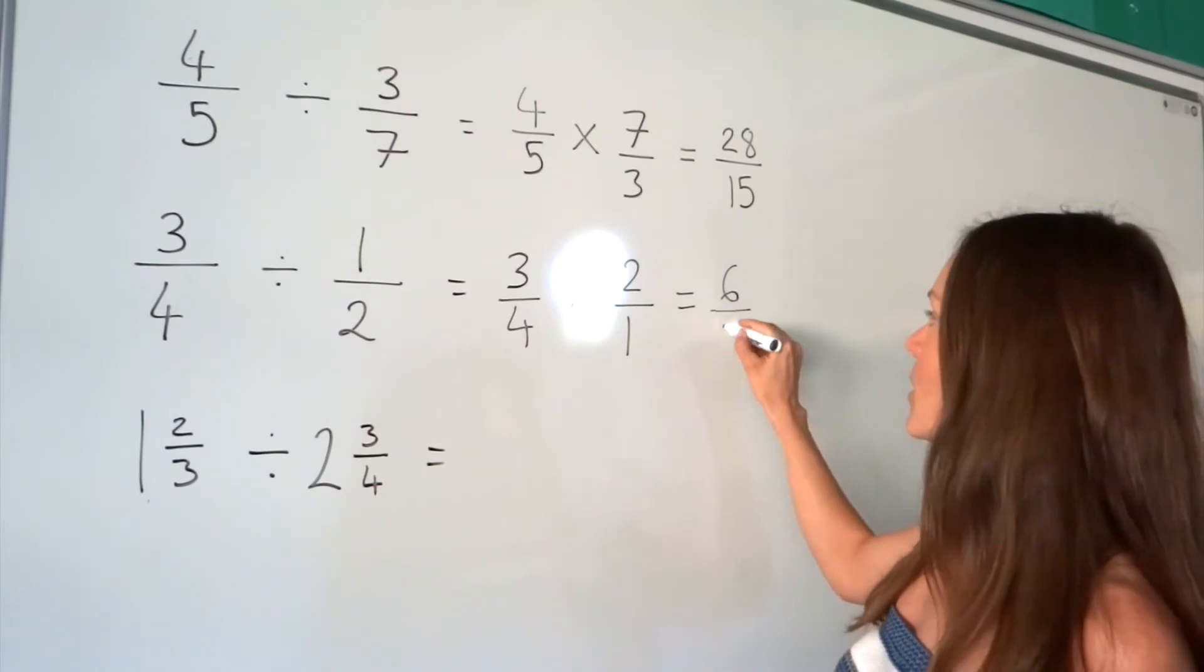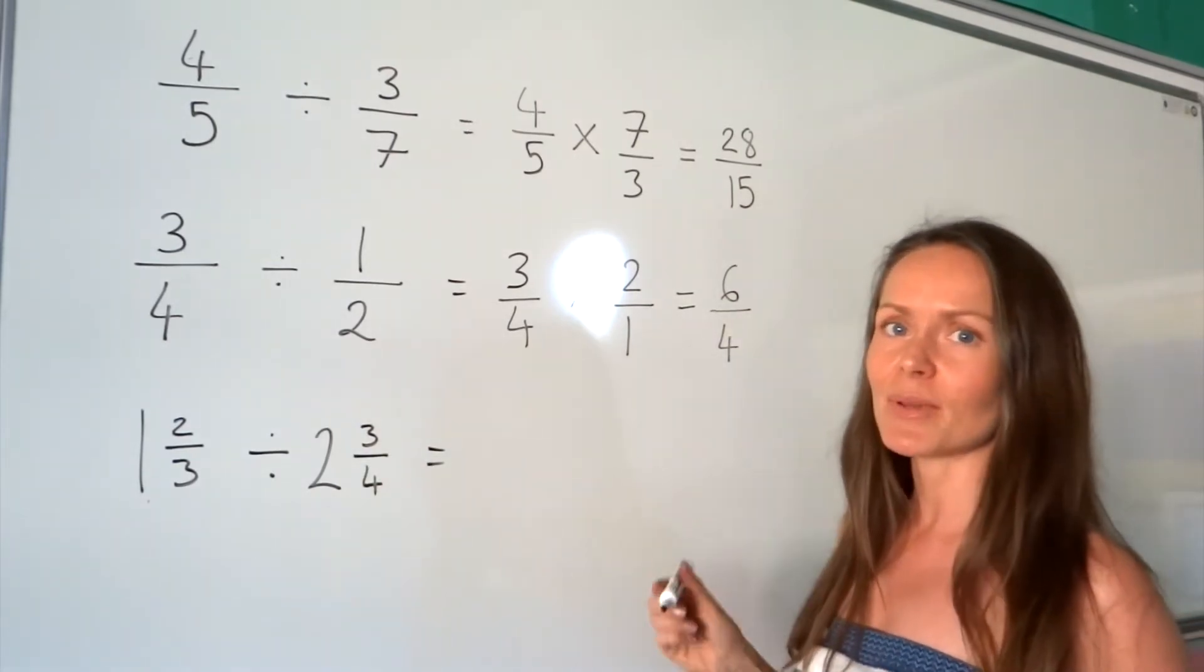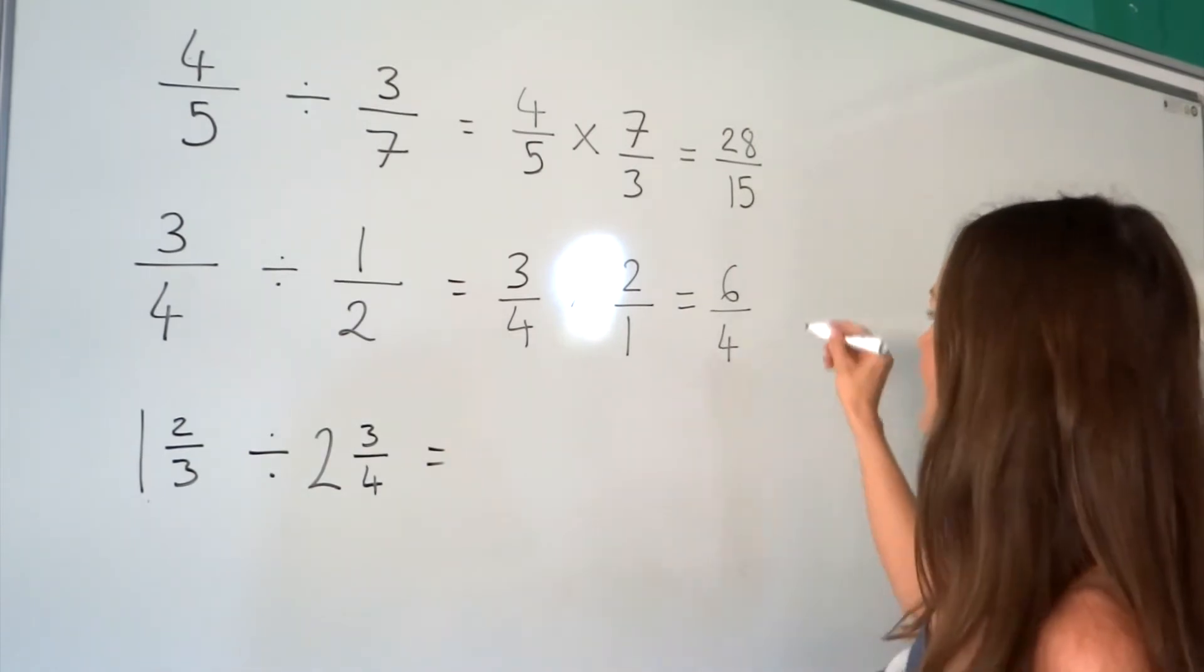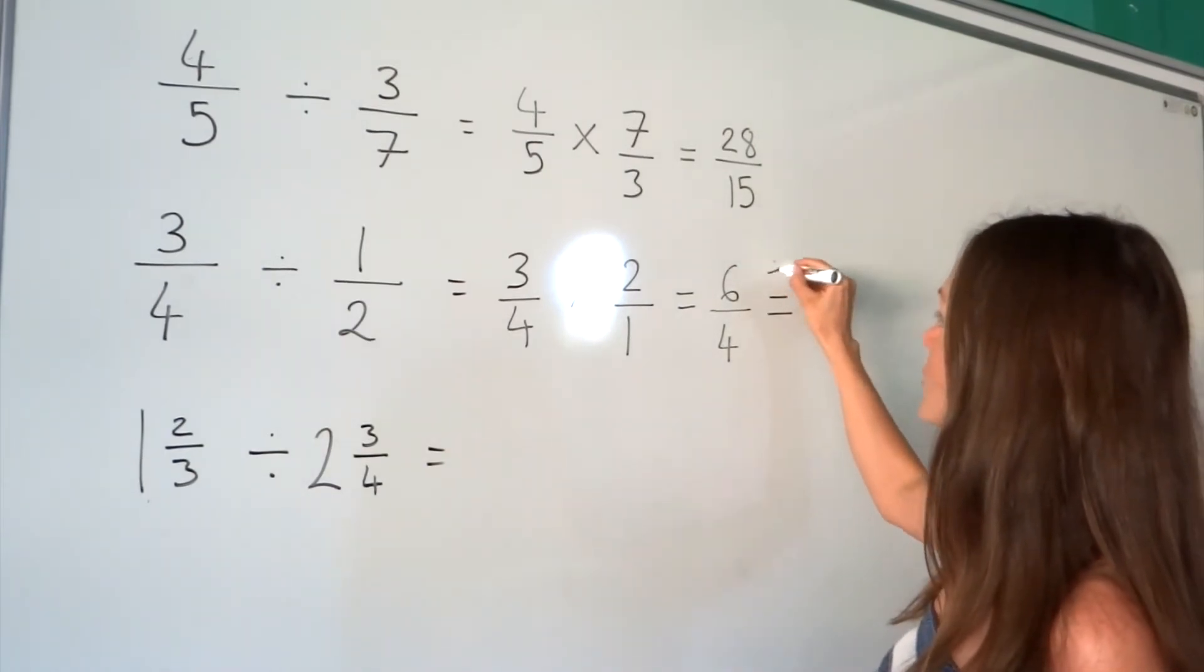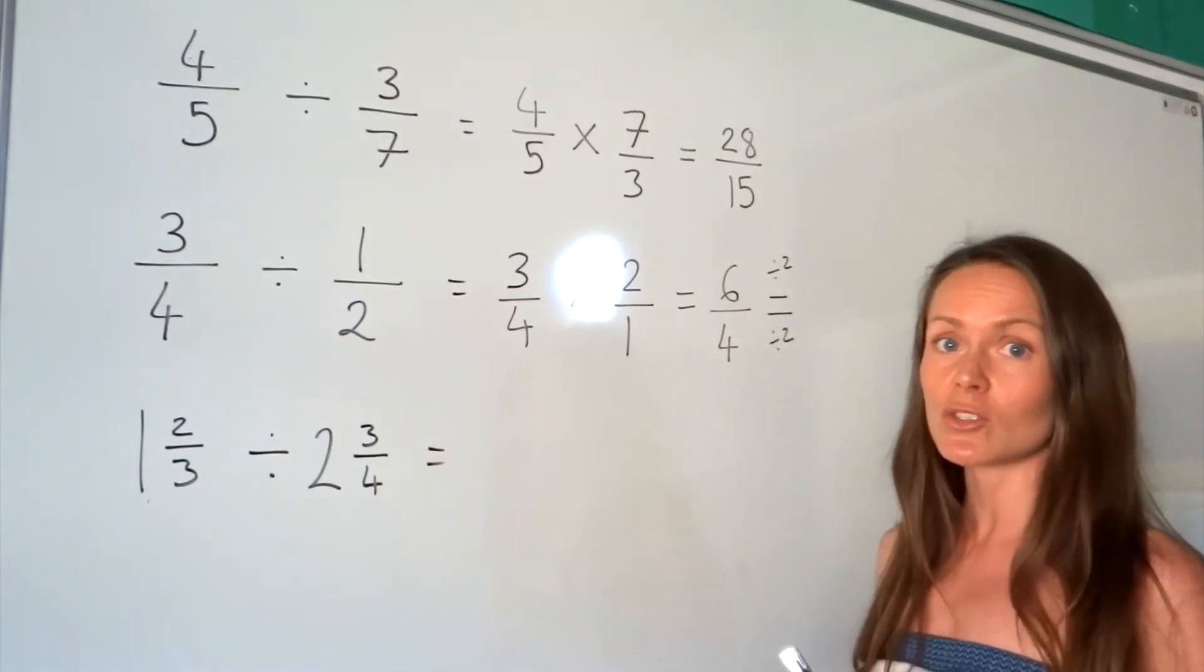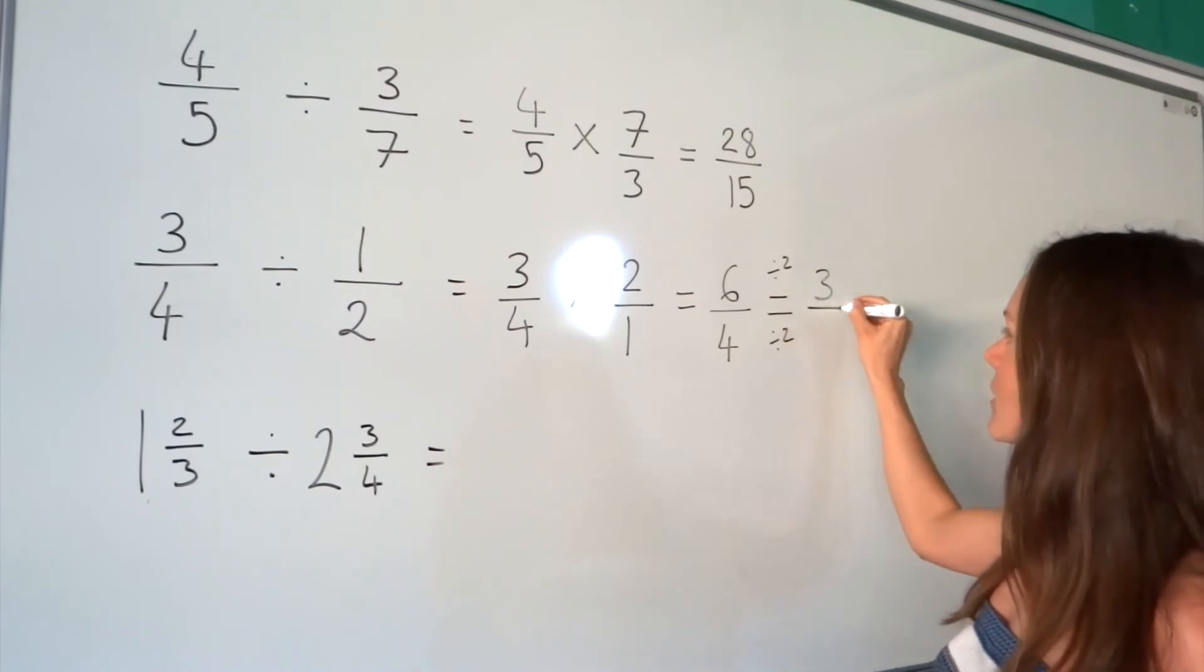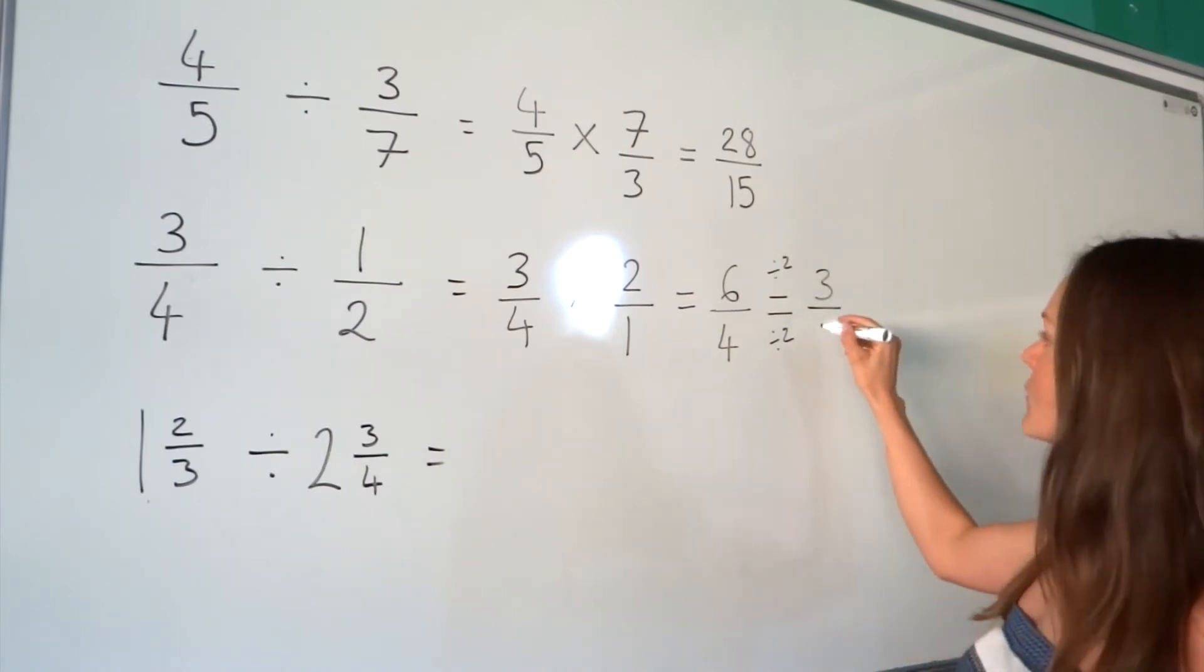This fraction we can simplify, because there's a common factor in both 6 and 4. I can divide both of these numbers by this common factor, which is 2. So 6 divided by 2 gives me 3, and 4 divided by 2 gives me 2.